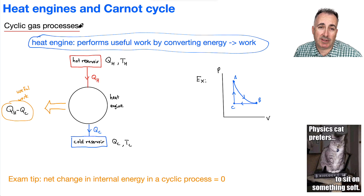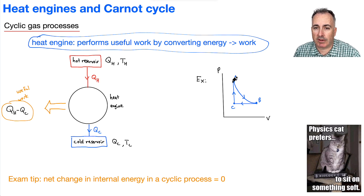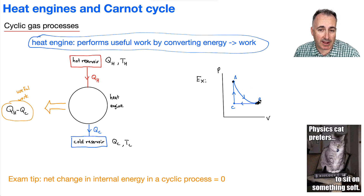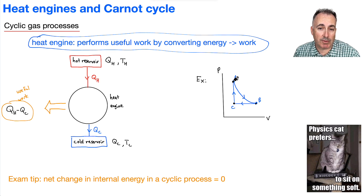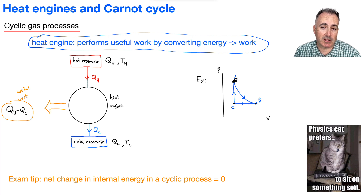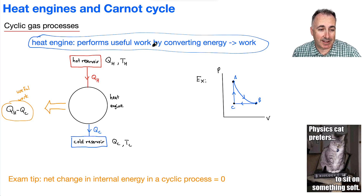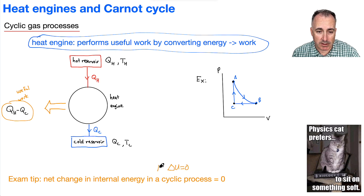When we talk about a cyclic process, what do I mean? It's something that can actually repeat itself. For example, if we started at point A, went down to B in an isothermal expansion, then from B to C in an isobaric process, then isovolumetric from C back to A — this is a cyclic gas process because it follows a cycle. A nice exam tip: remember the net change in internal energy in a cyclic process is zero. In other words, delta U equals zero.